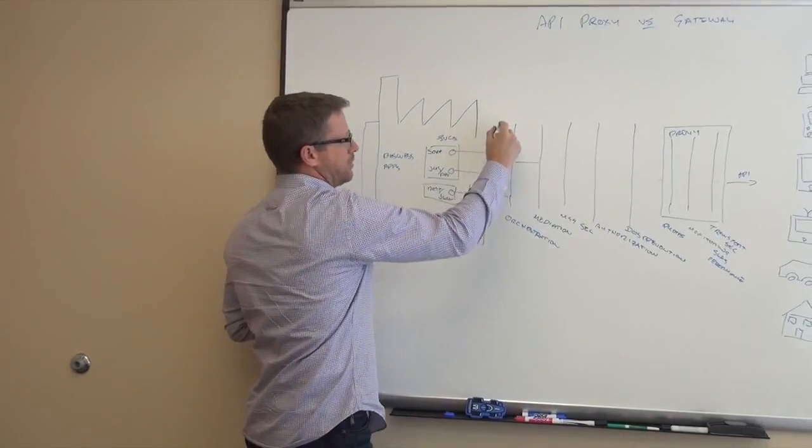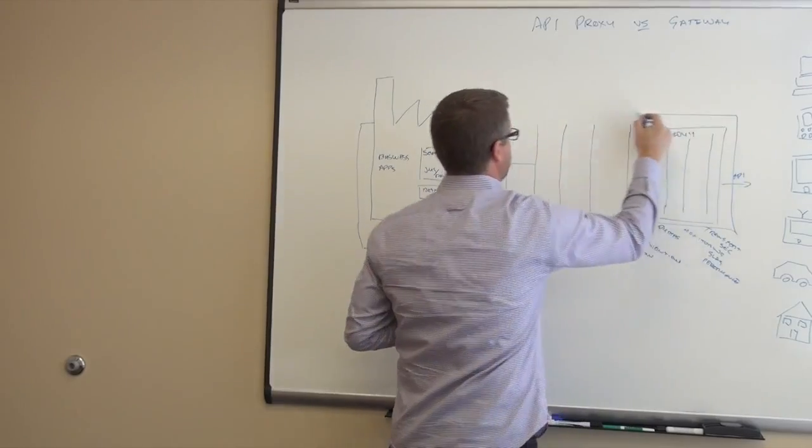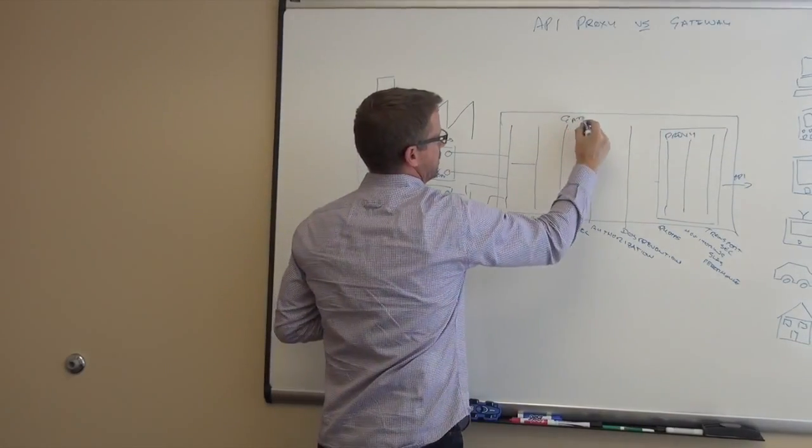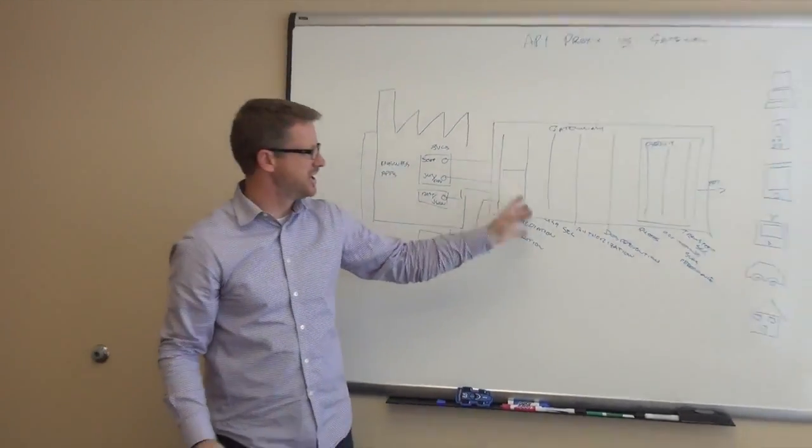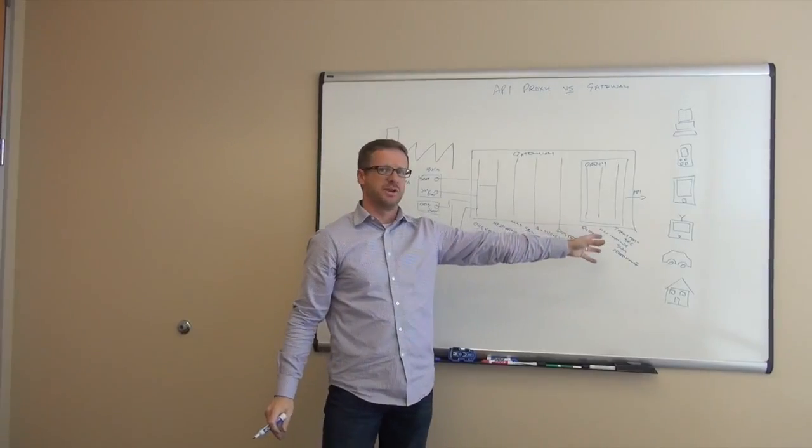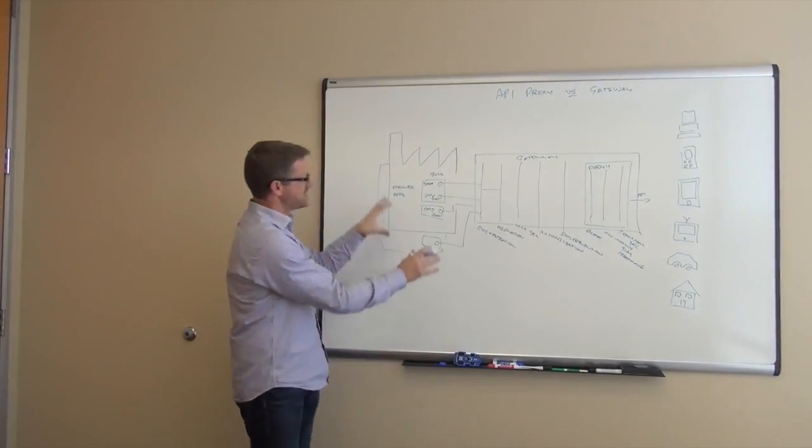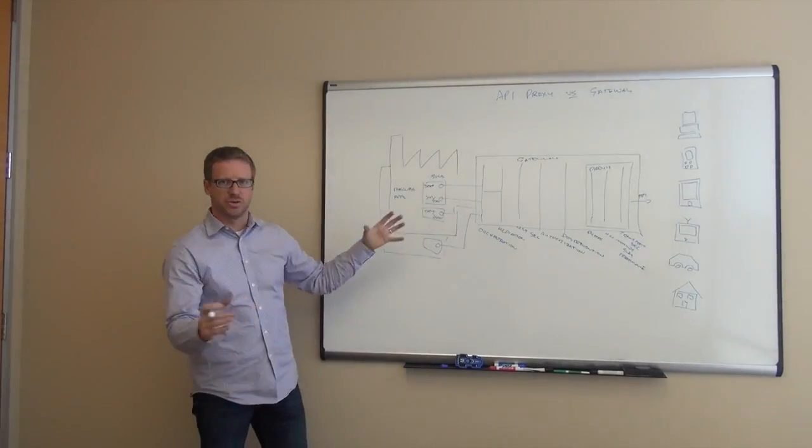And these capabilities are all delivered through a gateway. And in reality, the gateway is also going to wrap your proxy. So the gateway will exist here. The gateway includes the proxy functionality. Delivers all of this orchestration, mediation, message security, etc., on top of the transport level security and monitoring the quotas that the proxies give you. And it's allowing you to create single APIs from multiple backend systems and do all that sort of stuff.